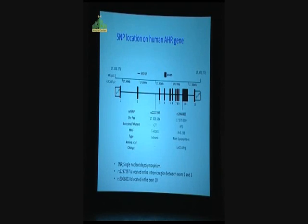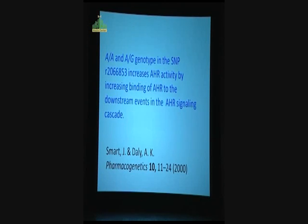Then we look at the different SNPs of AHR. To cut this long story short, concentrate on this one here. RS2066853 has this lysine-arginine AGG-AG swap. Also, as a control, we look at the intron SNP, which is CT. The important thing about RS2066853 is that it's been known since 2000 that the AA and AG genotype in this SNP increases AHR activity by increasing the binding of AHR to downstream events in the AHR signaling cascade. That's the reason why we have chosen this particular SNP for further study.